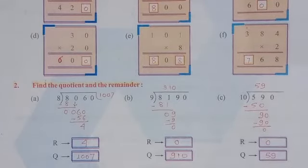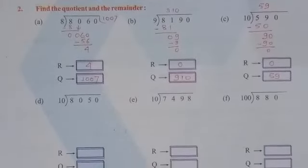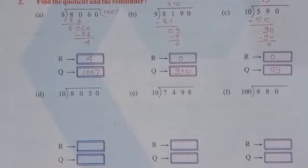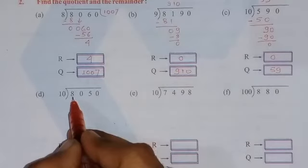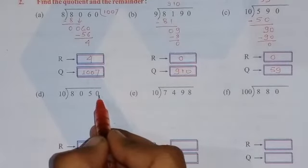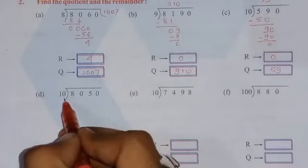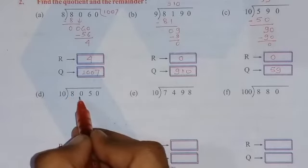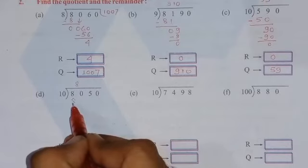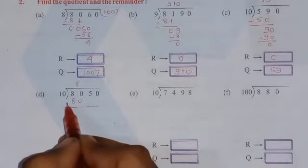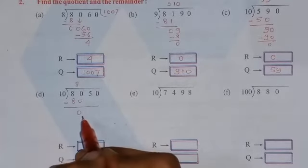Similarly, we have to divide. Continue three more questions. Here is given 8050 and we have to divide this number by 10. So we will divide the number 80 by 10. So 10 8's are 80. Now subtract this number, you will get 0.